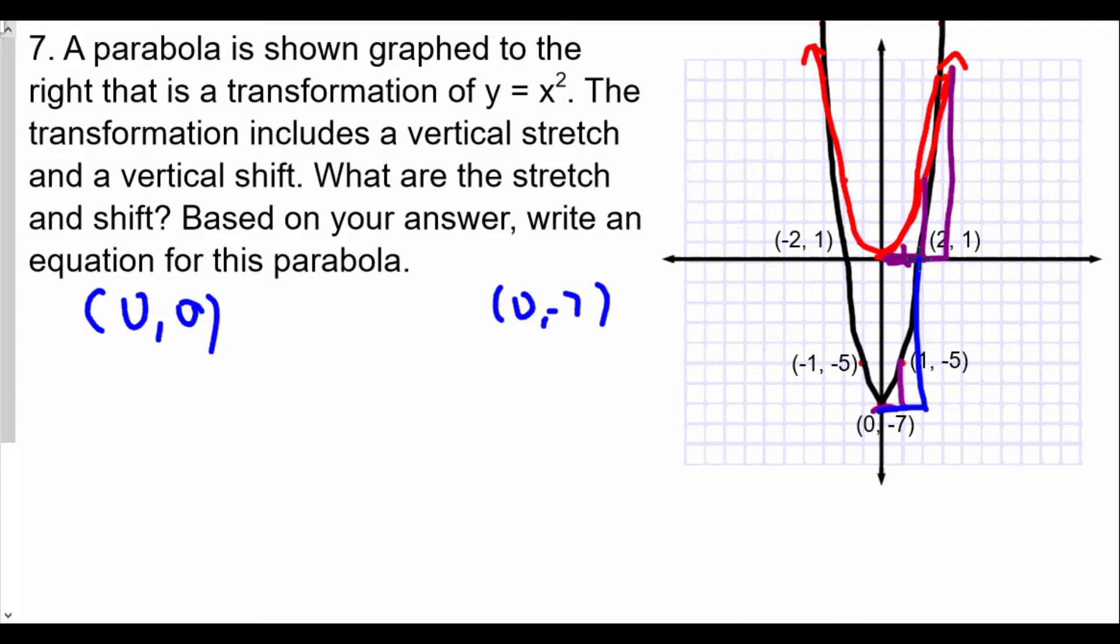Normally if you go to the right by one you go up by one, here for the new transformed function we go to the right by one we go up by two, so two times one is two. The original x squared: you go to right by two you go up by four because two squared is four. Here for the new transformation we go to right by two we go up by eight, so instead of going up by four we go two times four is eight, which means we have here a vertical stretch